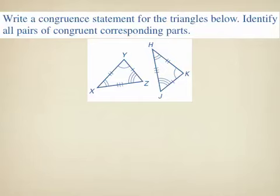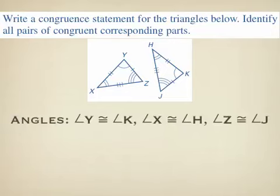The first example asks us to write a congruence statement for the triangles below and identify all pairs of congruent corresponding parts. We are given triangle XYZ and triangle HJK. Looking at the angles first, angle Y of the first triangle has one arc and angle K of the second triangle has one arc, which means these two angles are congruent. Angle Y is congruent to angle K, angle X is congruent to angle H, and angle Z is congruent to angle J, as given in the picture.